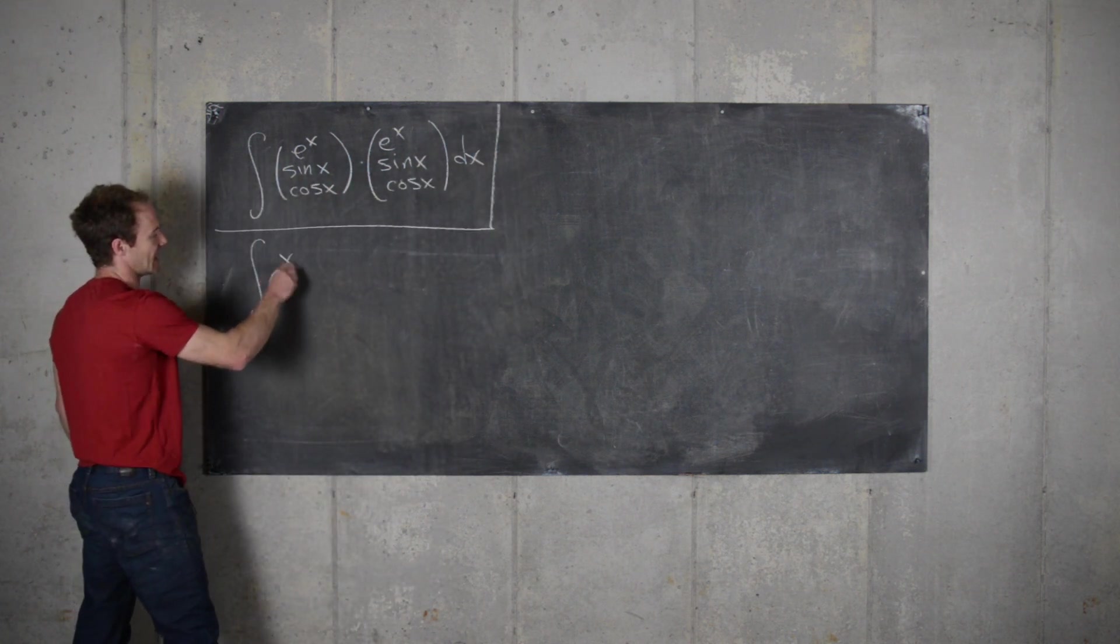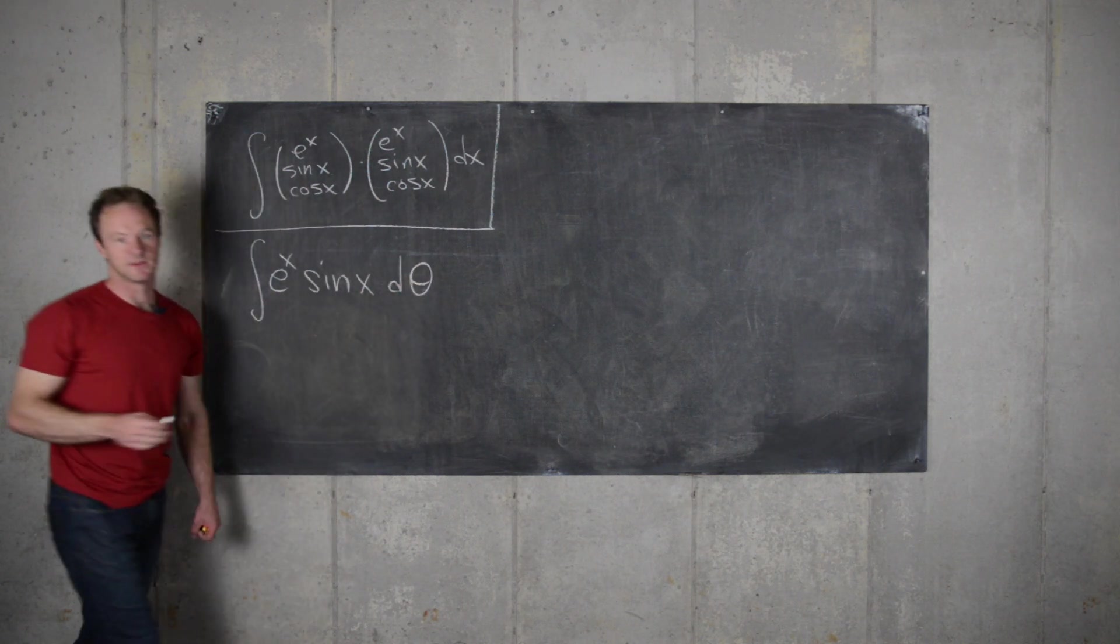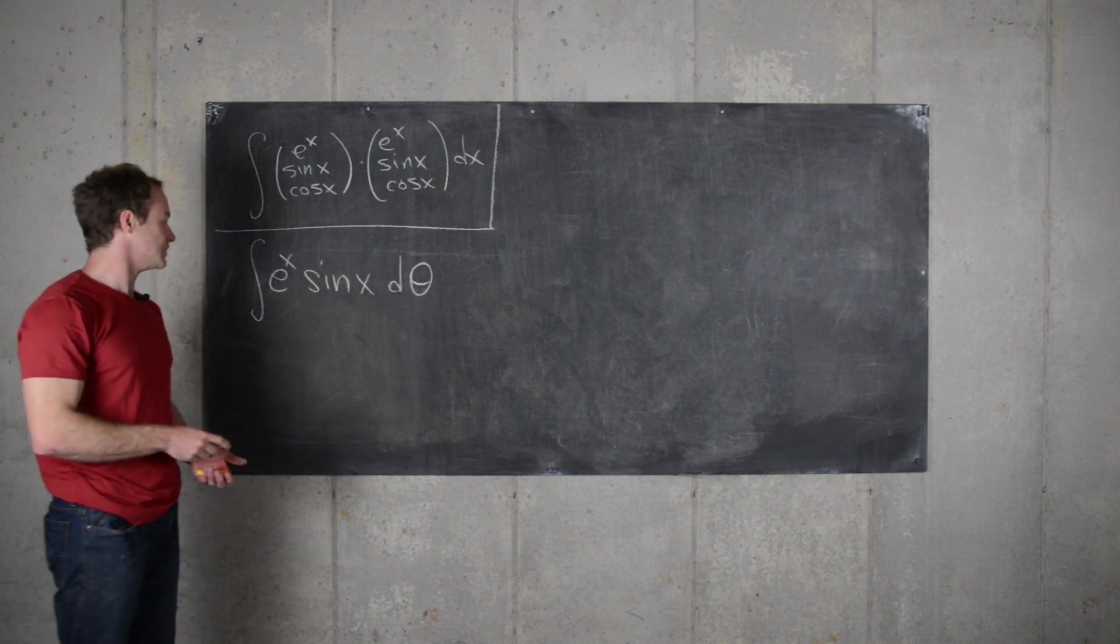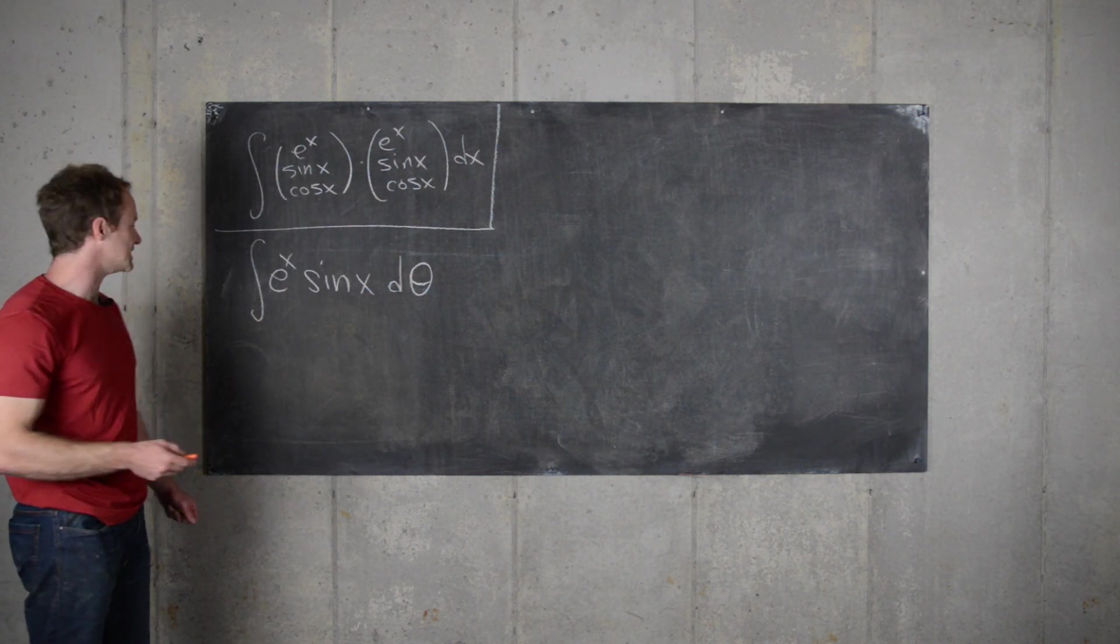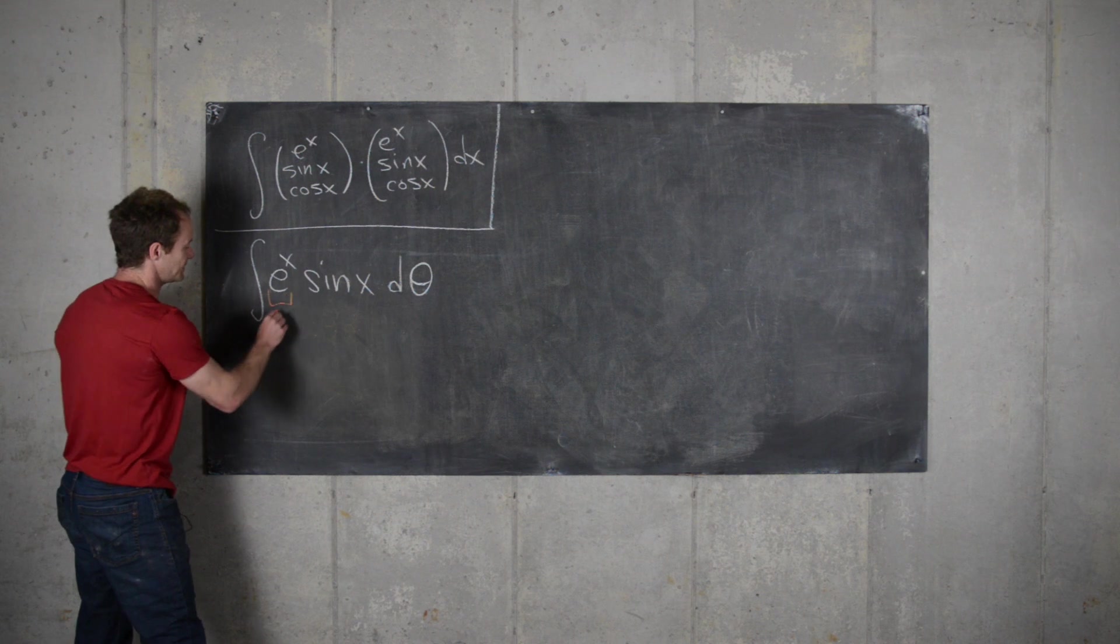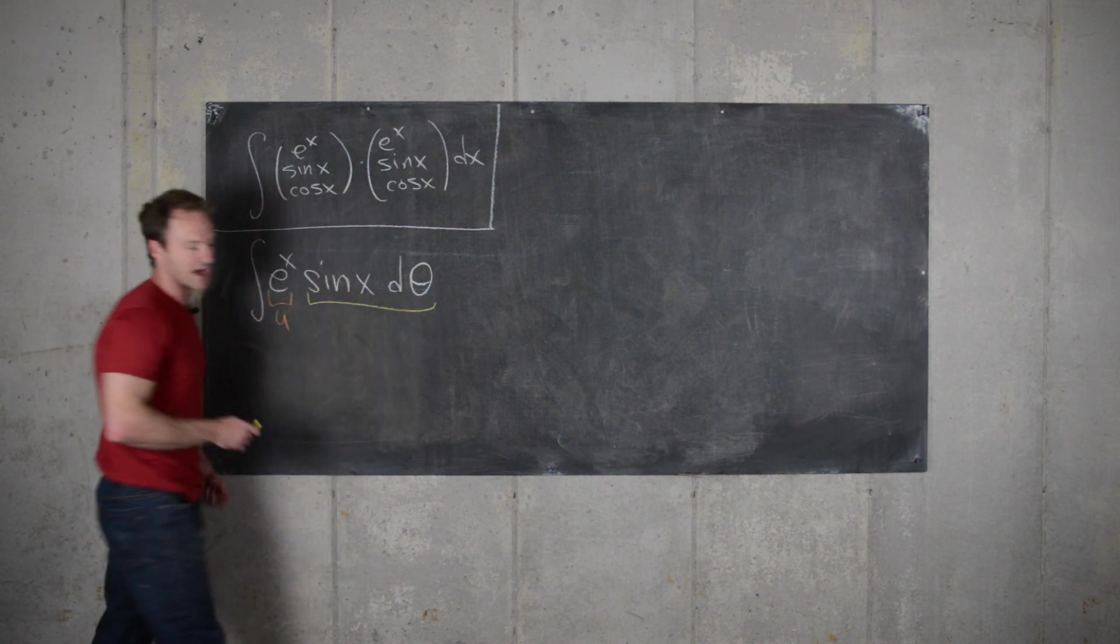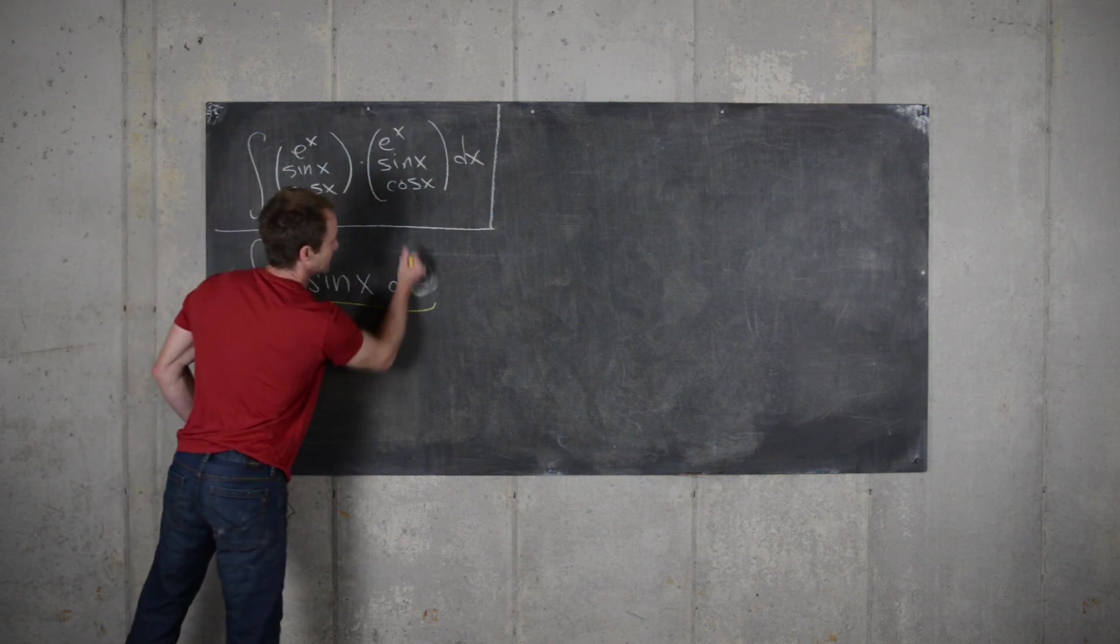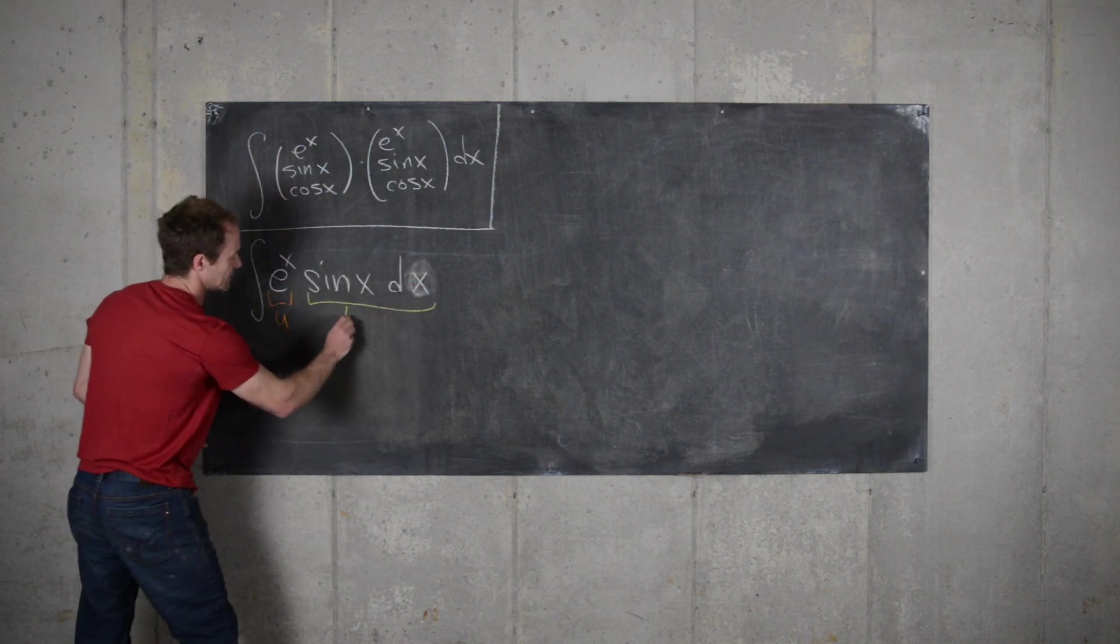So, e to the x sine x dx, this antiderivative. And so we'll have to do integration by parts. So that means we need to pick our u and we need to pick our dv. So let's let this be u and then let's let all the rest sine x dx be dv.